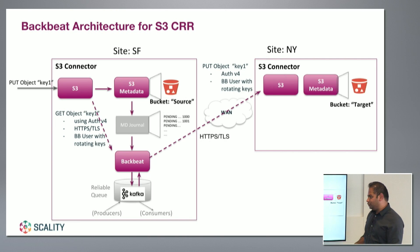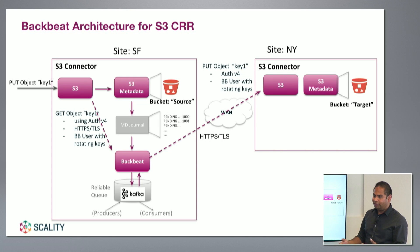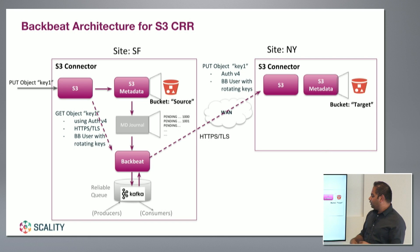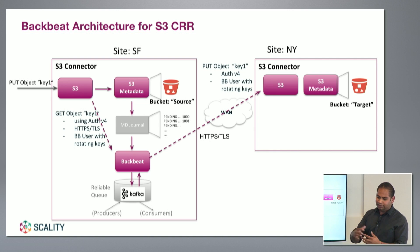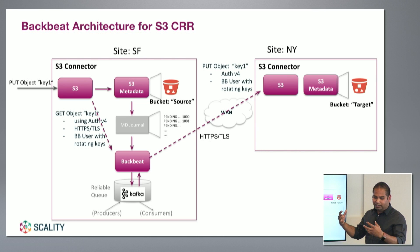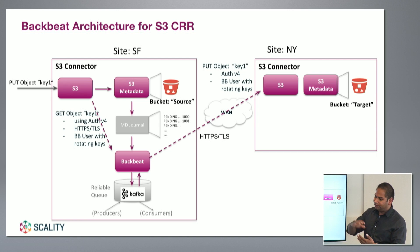This way we achieve multi-threading or asynchronous replication, giving much higher throughput whether you have one bucket you're writing heavily or ten buckets you're equally writing and replicating at the same time. As soon as you write to Kafka, we have a consumer listening to the topic. As soon as any entry comes in, it wakes up, takes the entry, and then writes to the destination — first we write the data, then we write the metadata updating the status of the object.